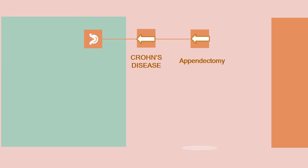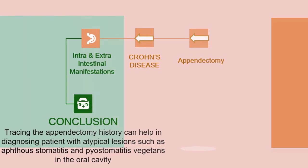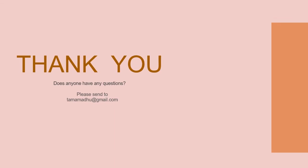In this case, appendectomy surgery triggered Crohn's disease, followed by intra- and extra-intestinal manifestations. Clinical symptoms such as anemia, chronic diarrhea, hematochezia, arthritis in both knees, acne on head and back, atypical oral lesions including aphthous stomatitis and stomatitis vegetans, and weight loss of 15 kg in 7 months were found. As a conclusion, tracing the appendectomy history can help in diagnosing patients with atypical oral lesions such as aphthous stomatitis and stomatitis vegetans. Thank you very much.